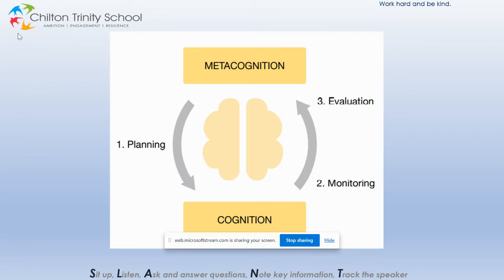The diagram on the screen represents the metacognitive regulation cycle, and this was introduced to students. This is not a one-off process of discrete steps, but an ongoing cycle. The cycle of plan, monitor, and evaluate is crucial to any metacognitive strategy.